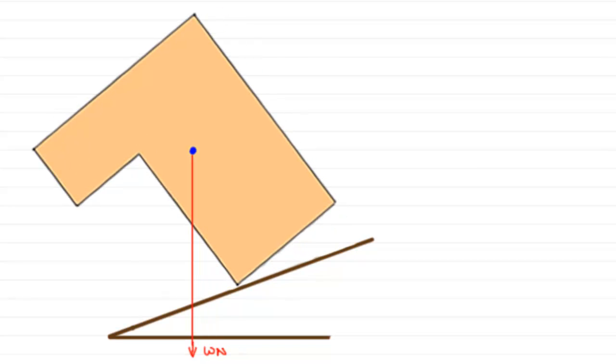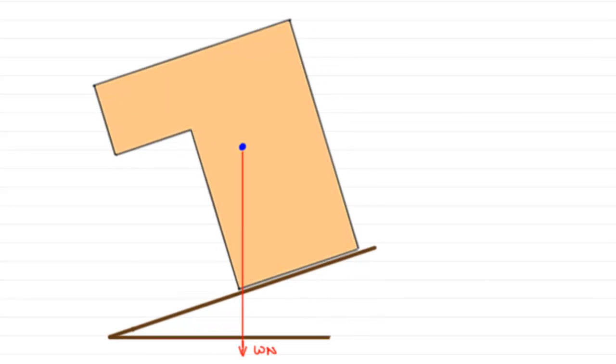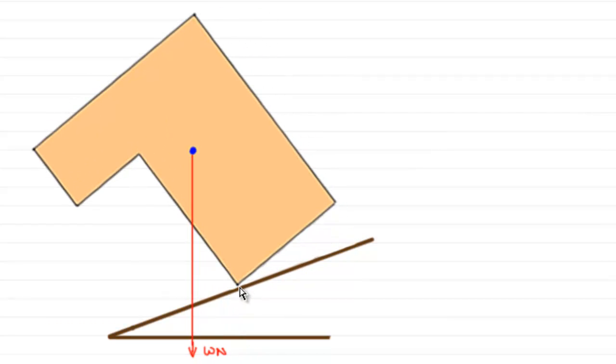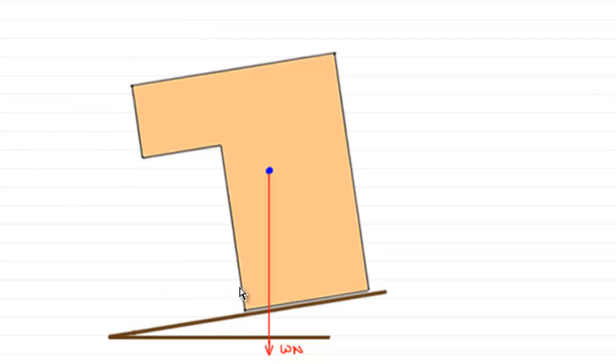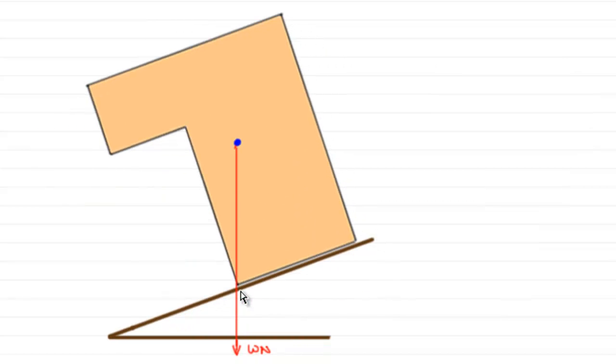So, we're going to look at questions then on toppling. We raise the angle of the plane until the weight acts through this point here. And as soon as it gets to that point, if we increase the plane's angle any further, it will topple. So, what is this angle that the plane has to be before the lamina starts to topple?